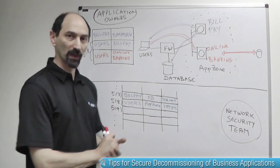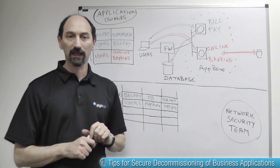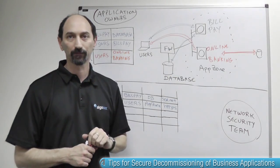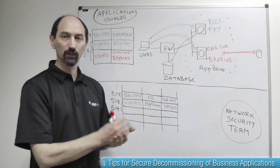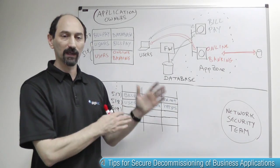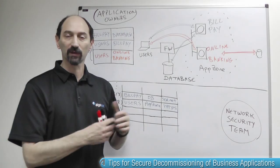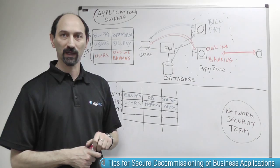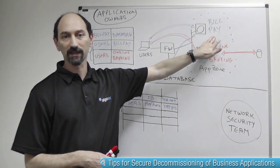Now imagine the situation where the application owners decide to replace the old bill pay system with a new one. They would provision a new server, install the new software, test it, and evaluate it. At some point, when they realize the new system is functioning properly, they can declare it production and turn off the old bill pay system.